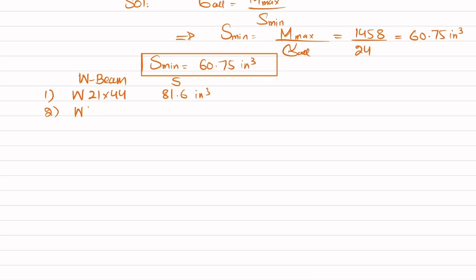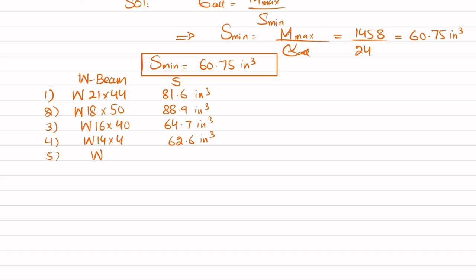Additional options include: W18×50 with S = 88.9 in³; W16×40 with S = 64.7 in³; W14×43 with S = 62.6 in³; W12×50 with S = 64.2 in³; and W10×68 with S = 75.7 in³.